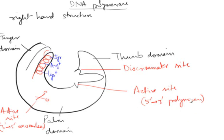Because of this discriminator site, DNA polymerase polymerizes only deoxyribonucleotides within the DNA. The palm domain has the active site for 5' to 3' polymerase activity, which is the major task of DNA polymerase. The palm domain also has an active site for 3' to 5' exonuclease activity, called the proofreading activity, which removes any wrong nucleotide added by the enzyme. The finger domain has a specific alpha-helical structure called the O-helix, which is rich in tyrosine, arginine, and lysine amino acids.